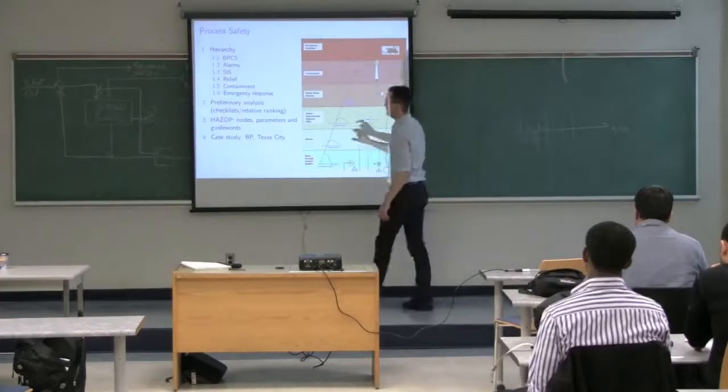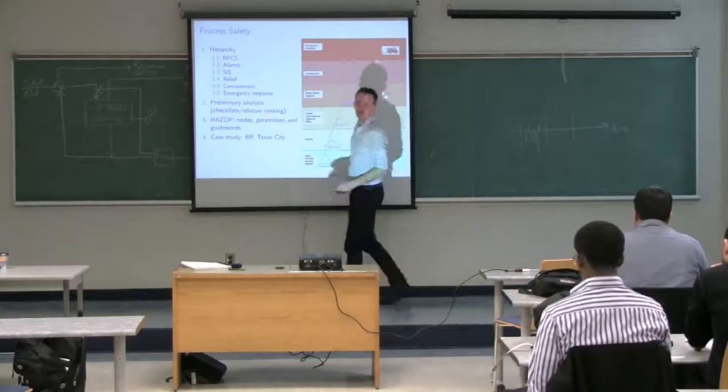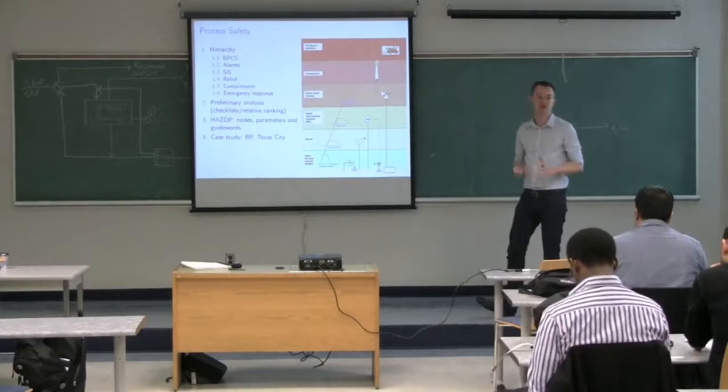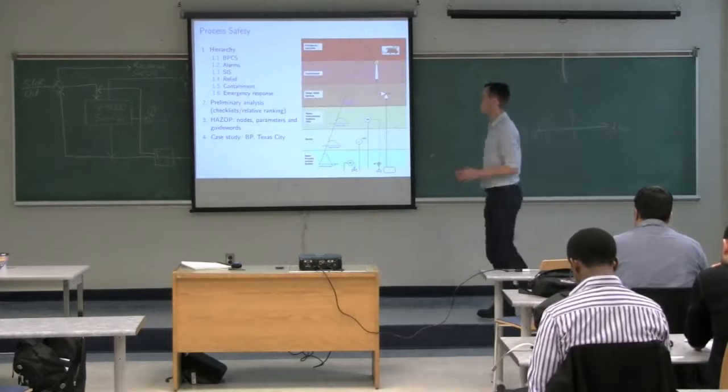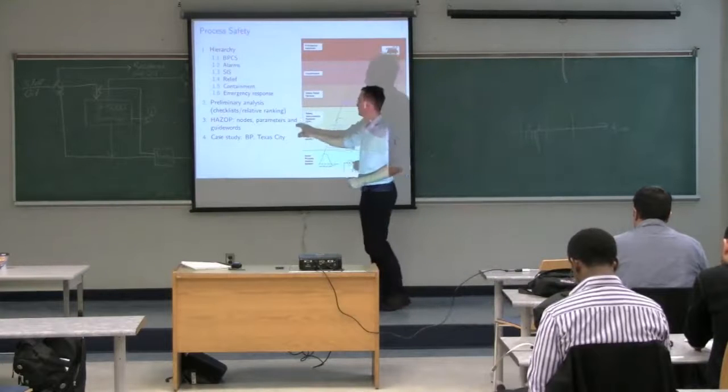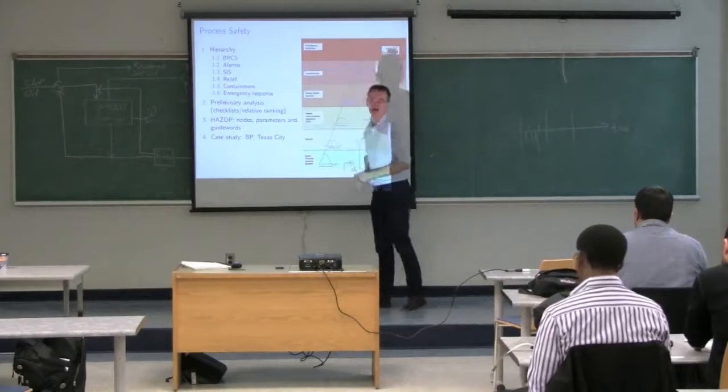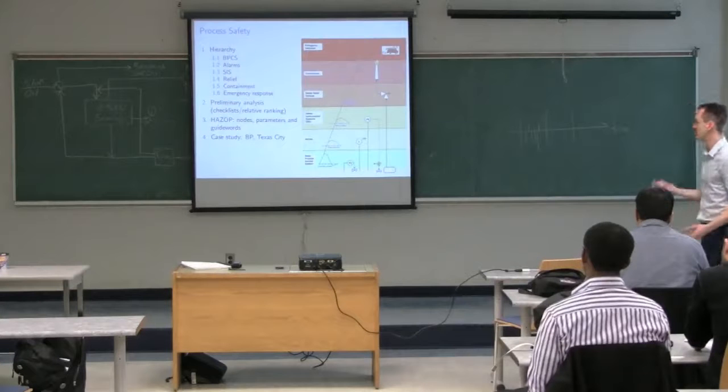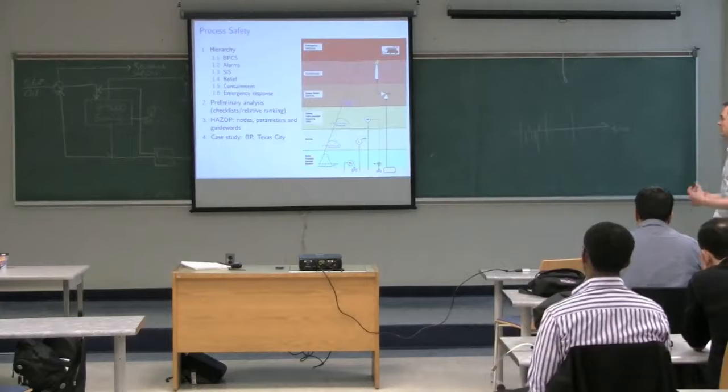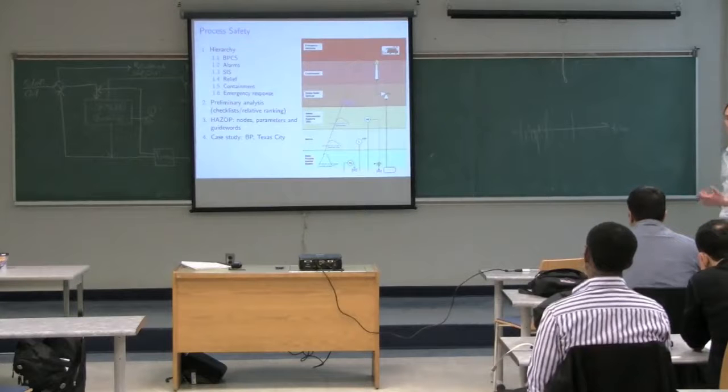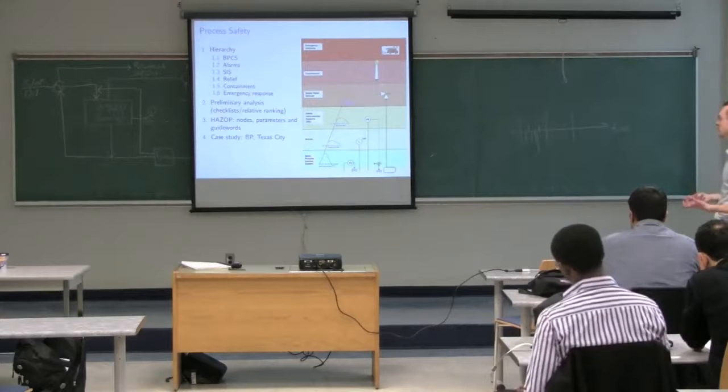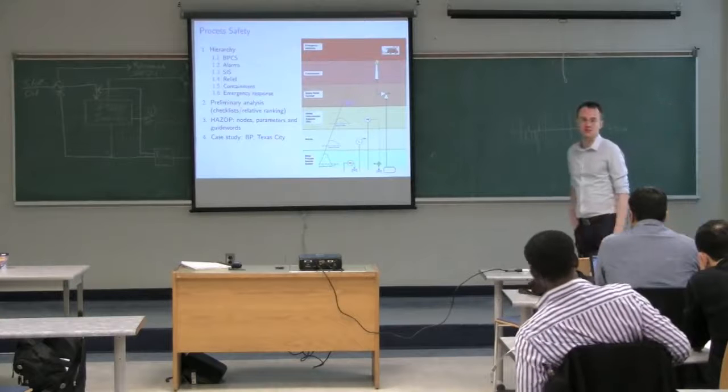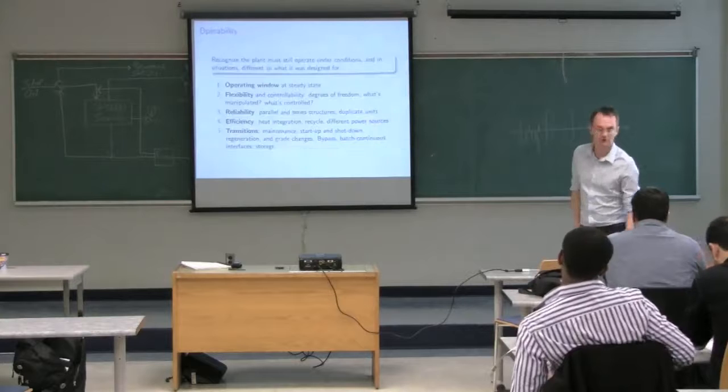So those are the hierarchy that we've considered. And then we move to a very brief discussion of checklists and relative rankings. So these are lists that we can go through to get a very rough idea of the system's safety. And then what we did spend more time on, and you did in your report as well, was looking at hazard operability study. So there's the two parts here. There's the hazard analysis, and there's the operability. And what you find is that in most cases that if you solve the hazard, you also intend to improve the operability of the process as well. And then we also looked at the BP case study in one of the tutorials.